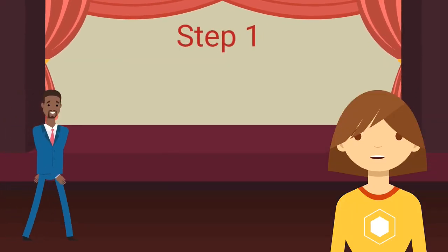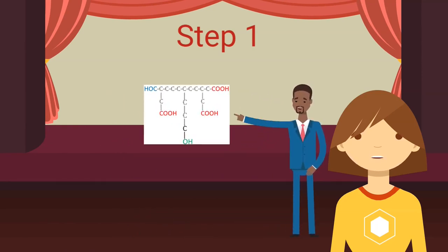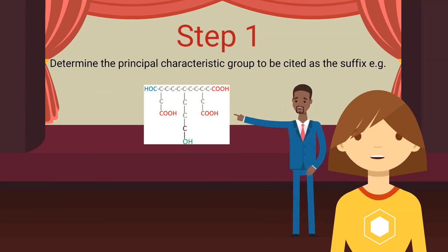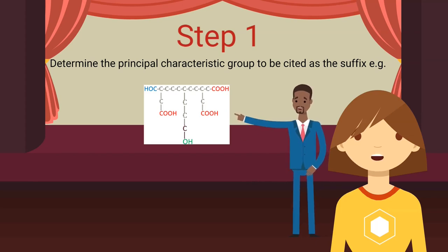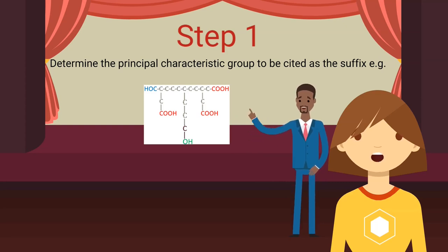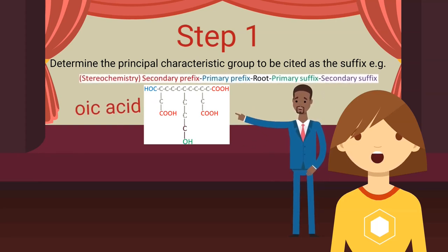Let's now explain each step one by one. Suppose this is the chemical structure given. According to step 1, we have to identify the senior characteristic group among all the characteristic groups present in the structure. In this structure I can see three functional groups: carboxylic group highlighted in red, aldehyde group shown in blue, and hydroxyl group in green. Go to the table and find which one is senior — carboxylic group is the senior most. So the secondary suffix part of the IUPAC name will be '-oic acid', while hydroxyl and aldehyde groups will become secondary prefixes.